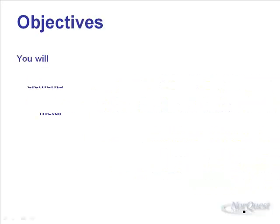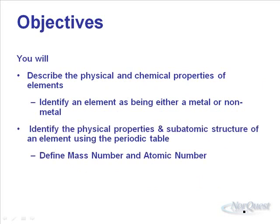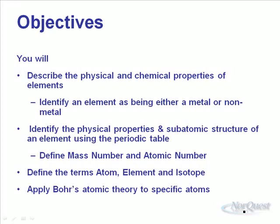By the end of this lecture, you'll be able to describe the physical and chemical properties of elements, and identify elements as being either a metal or a non-metal. You'll be able to identify the physical properties and subatomic structure of an element using the periodic table, define mass number and atomic number, define the term atom, element, and isotope, and apply Bohr's atomic theory to specific atoms.